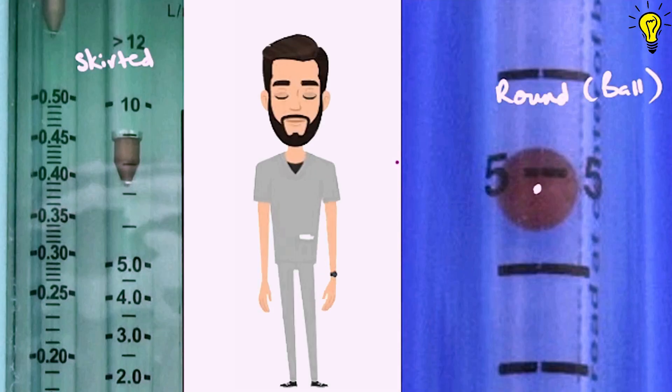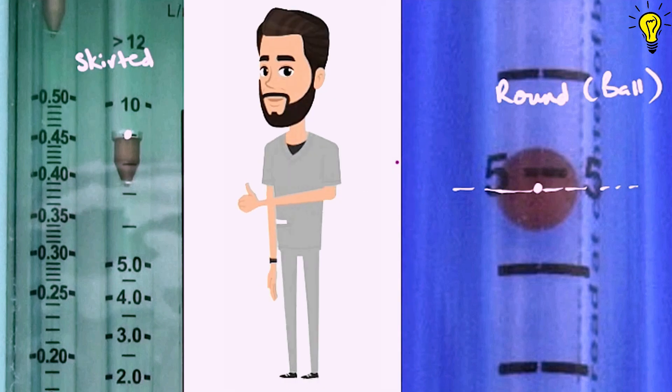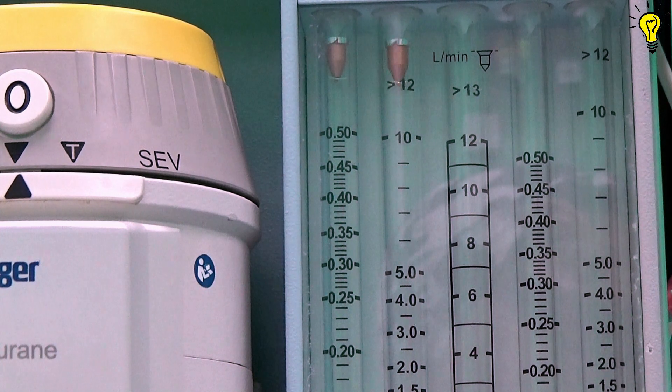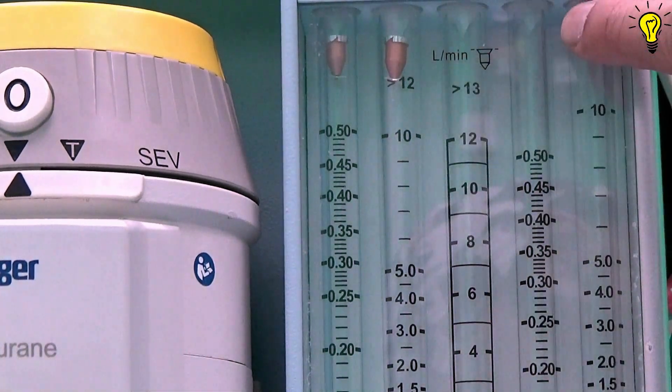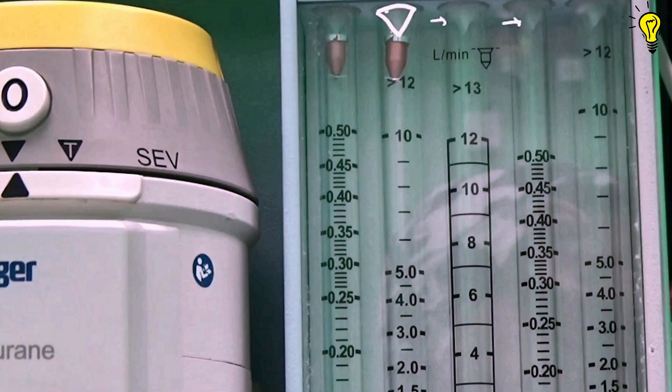For the ball type, you measure the flow taking the center of the ball as landmark. For the skirted type, the upper part of the float is taken as a reference point. On top of the top tubes, you can see these small stoppers. They prevent the float from blocking the outlets for gas.